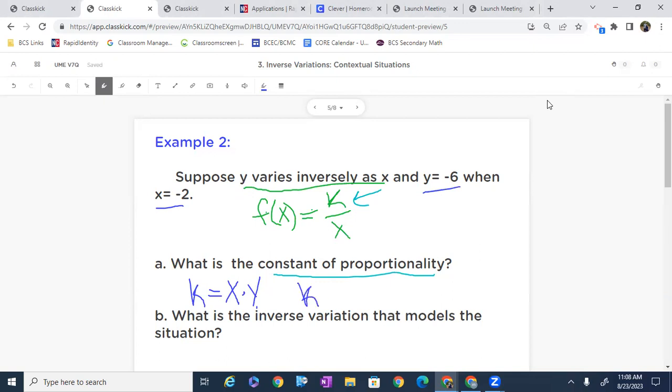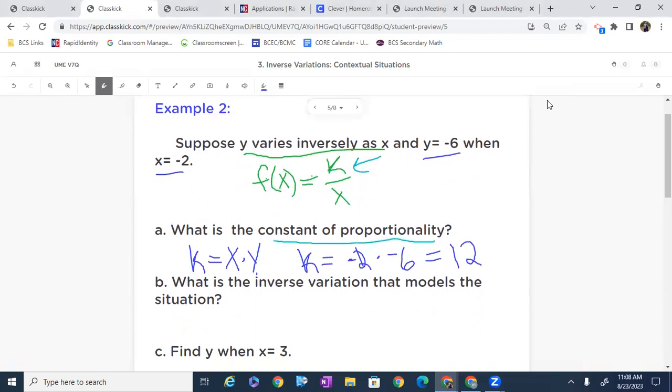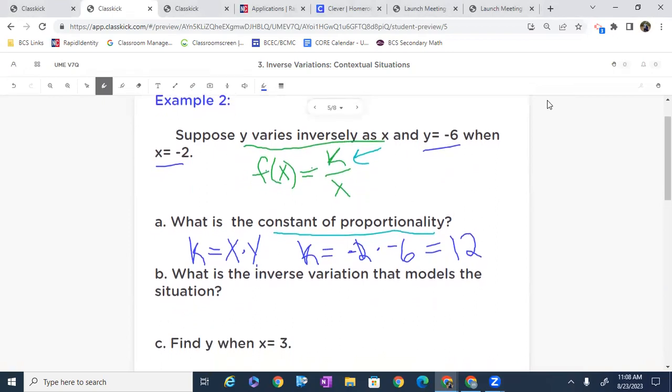I'm going to say k equals negative 2 times negative 6. And what is negative 2 times negative 6? That is simply 12. So that is going to be our constant of proportionality or constant of variation, depending on what phrase is happening in your classroom.